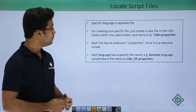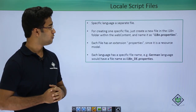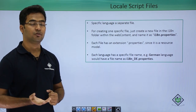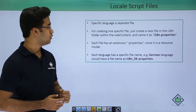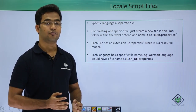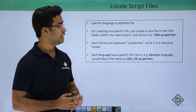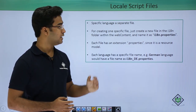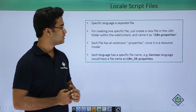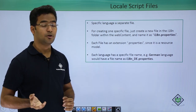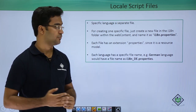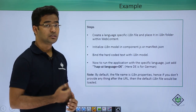Moving on, for different specific languages we create different specific files. For English we create an English file; for German we create a German file. By default we create i18n.properties itself, and for English we write i18n_en.properties, and for German we write i18n_de.properties. Each file has the extension .properties since it is a resource model, and we have to initialize this model in the manifest.json file.